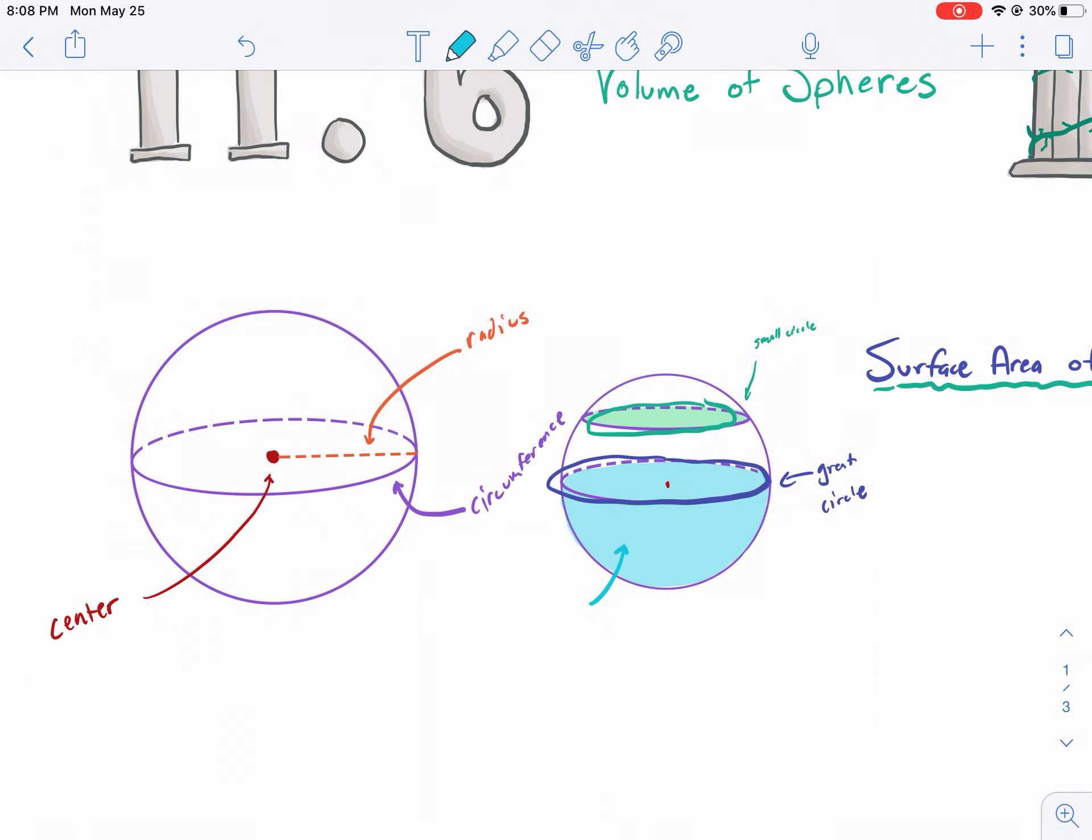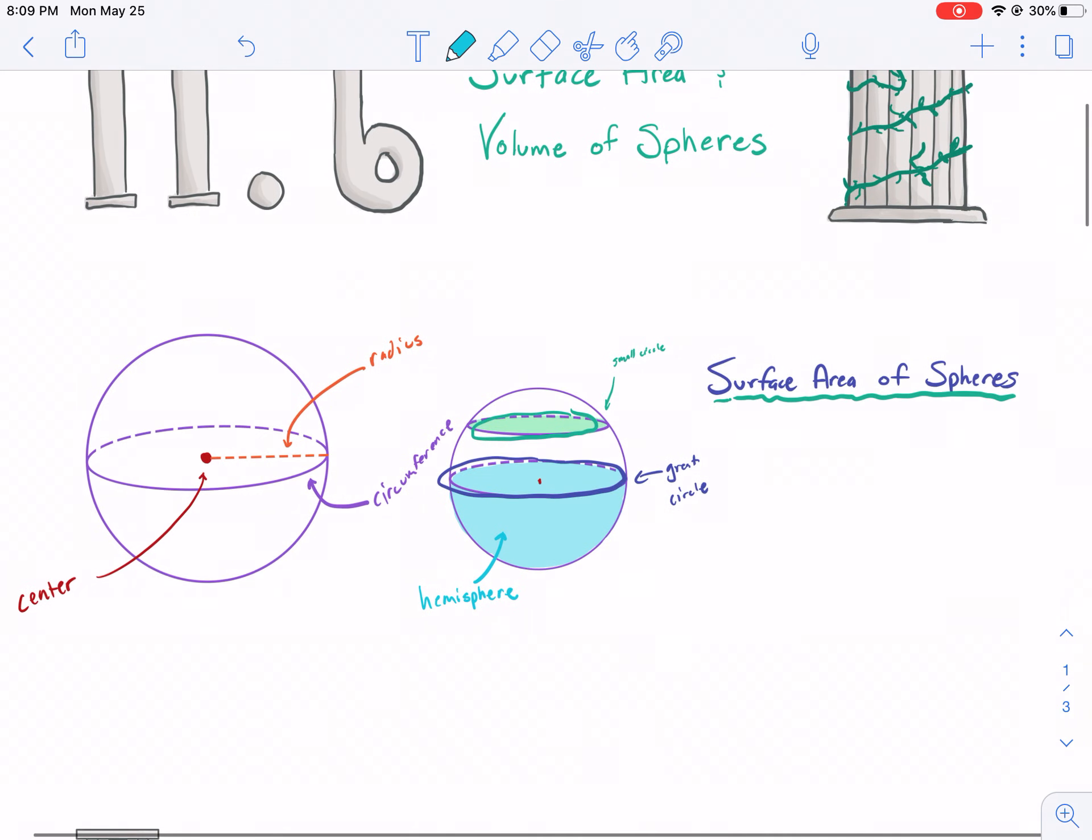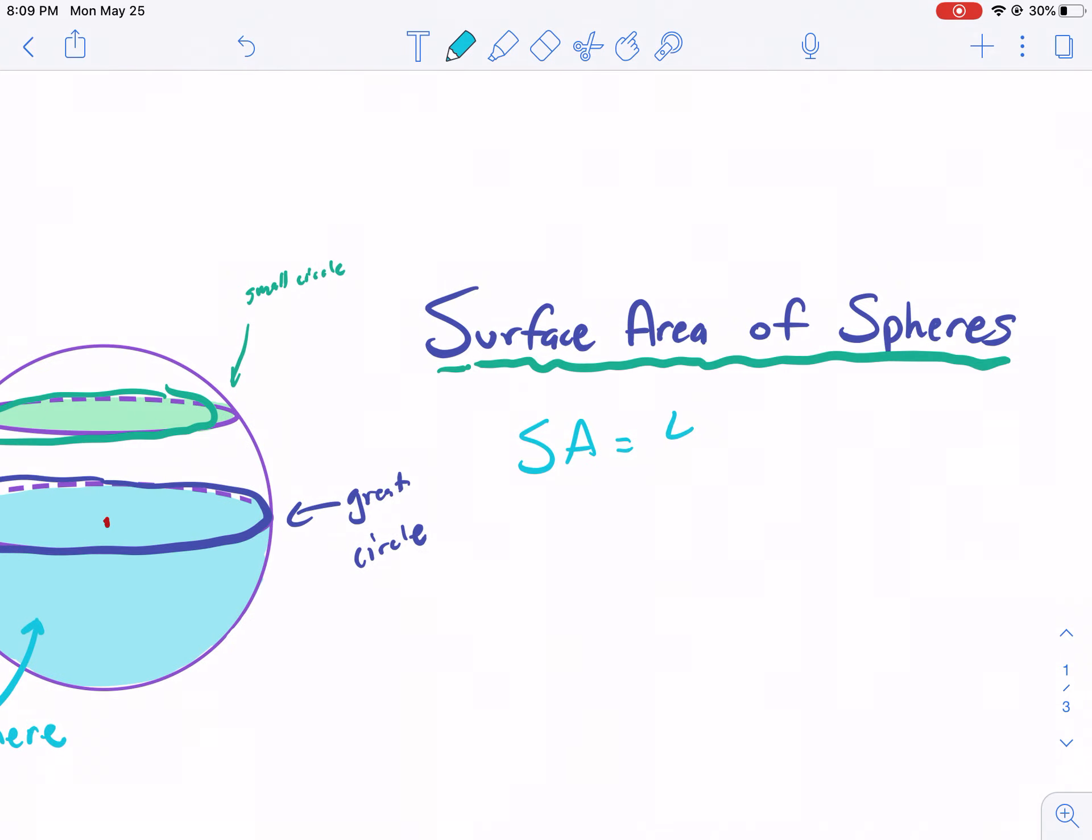Now, if we cut a sphere in half, it would form what's called a hemisphere. So if we were to cut this in half, think about cutting an orange in half, you'd have a hemisphere. So surface area of spheres. I'm not getting into the proofs today, but if you want the surface area of a sphere, it's simply four times pi r squared.